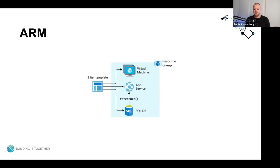ARM also gives us the possibility to work with templates. These Azure Resource Manager templates, or ARM templates, allow you to implement infrastructure as code for your solutions. Working with infrastructure as code has several benefits, like lowering the potential for human errors, creating identical environments on demand by using the same template multiple times, and cost reduction — you can create a test environment, deploy your application, run your tests, and when done, remove your environment again, so you don't have sitting resources that just cost money.